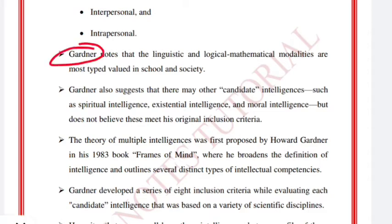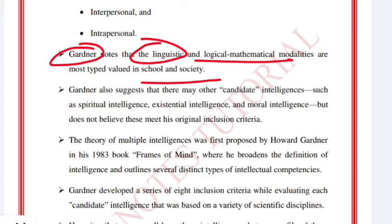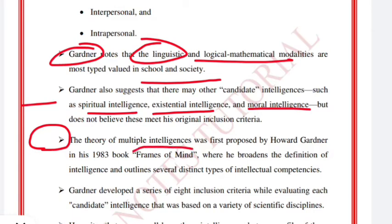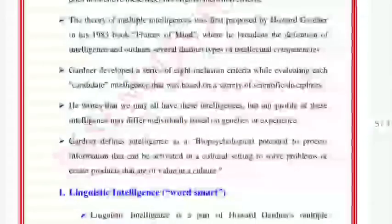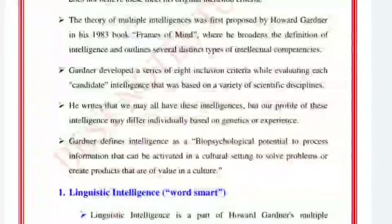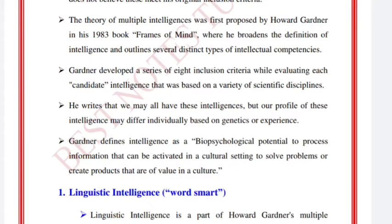Gardner said that linguistic and logical-mathematical types of intelligence are most valued in school and society. He also discussed other types such as spiritual intelligence, existential intelligence, and moral intelligence. He proposed this theory in his book 'Frames of Mind,' published in 1983. Gardner developed a series of eight inclusion criteria while evaluating each candidate intelligence, based on various scientific disciplines.